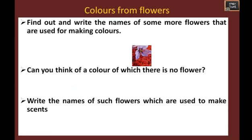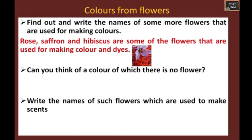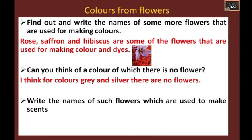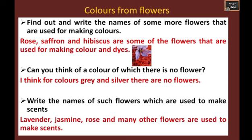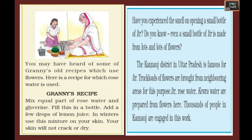Colors from flowers: find out and write the names of some flowers that are used for making colors. You can write rose, saffron, and hibiscus. Can you think of a color for which there is no flower? You can write gray or silver — there are no flowers of these colors. Write the names of flowers which are used to make scents — lavender, jasmine, rose, and many other flowers are used for making perfumes.